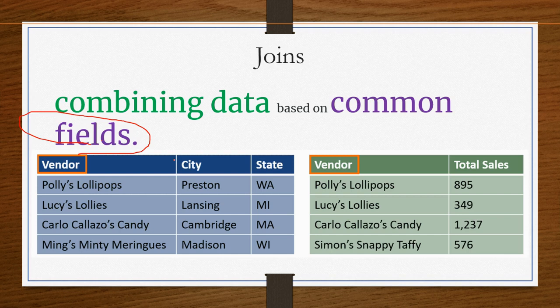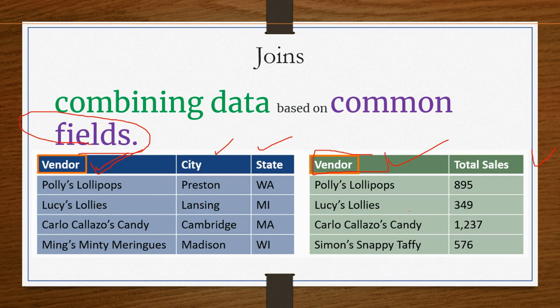For example, this is my first table where I have vendor, city, and state; and here I have vendor and total sales. Remember that in union, it strictly checks whether the structure is the same — if one table has three columns, the other must also have three columns. But in join, that is not the case. You only need at least one common field in order to join two tables.